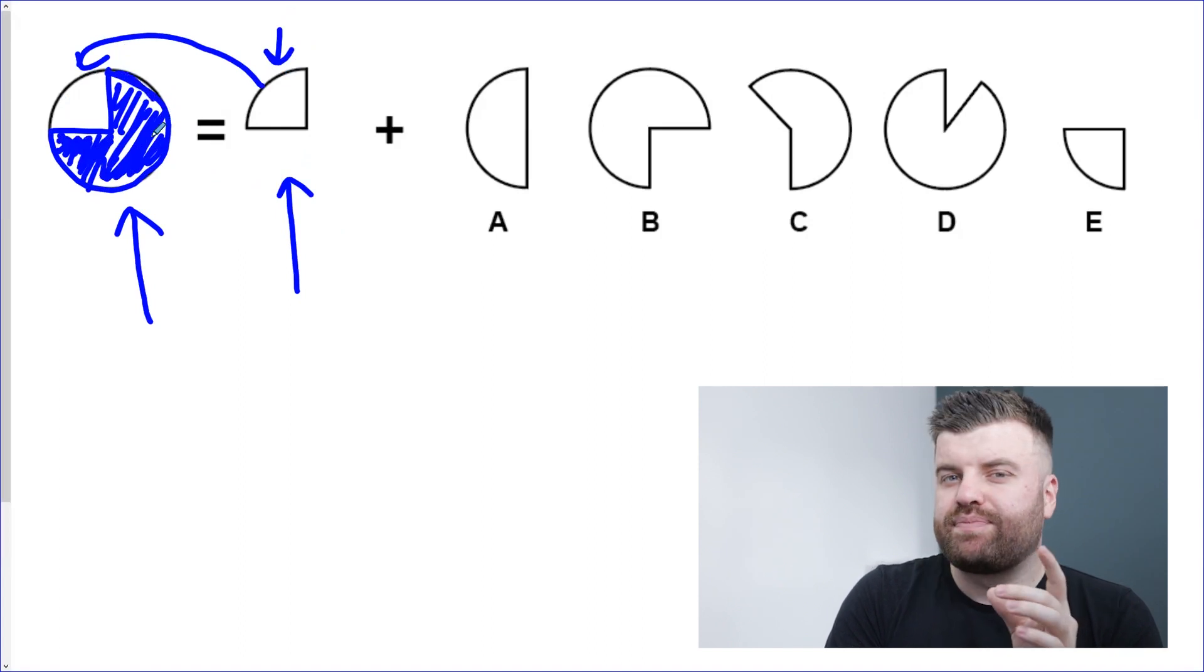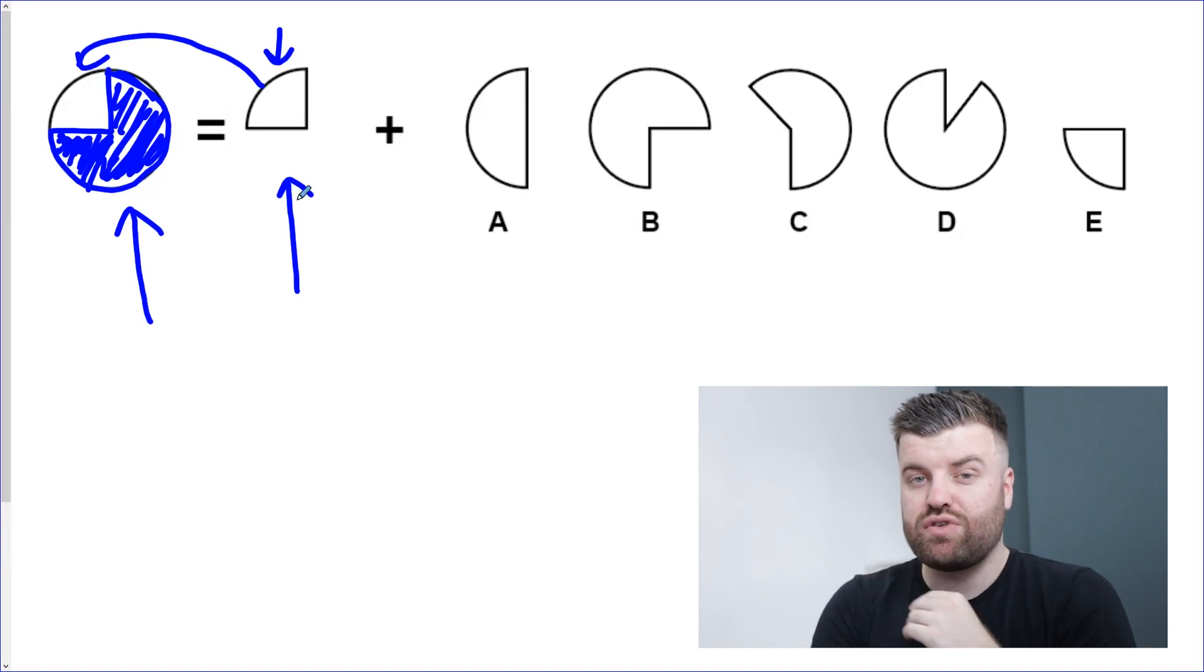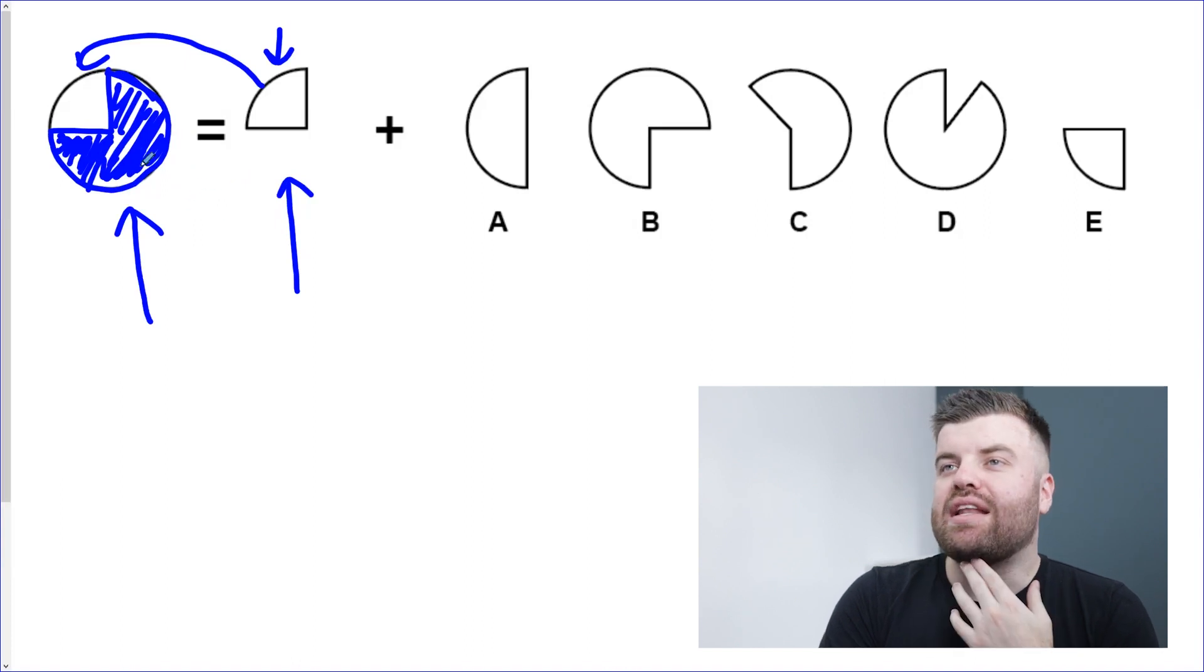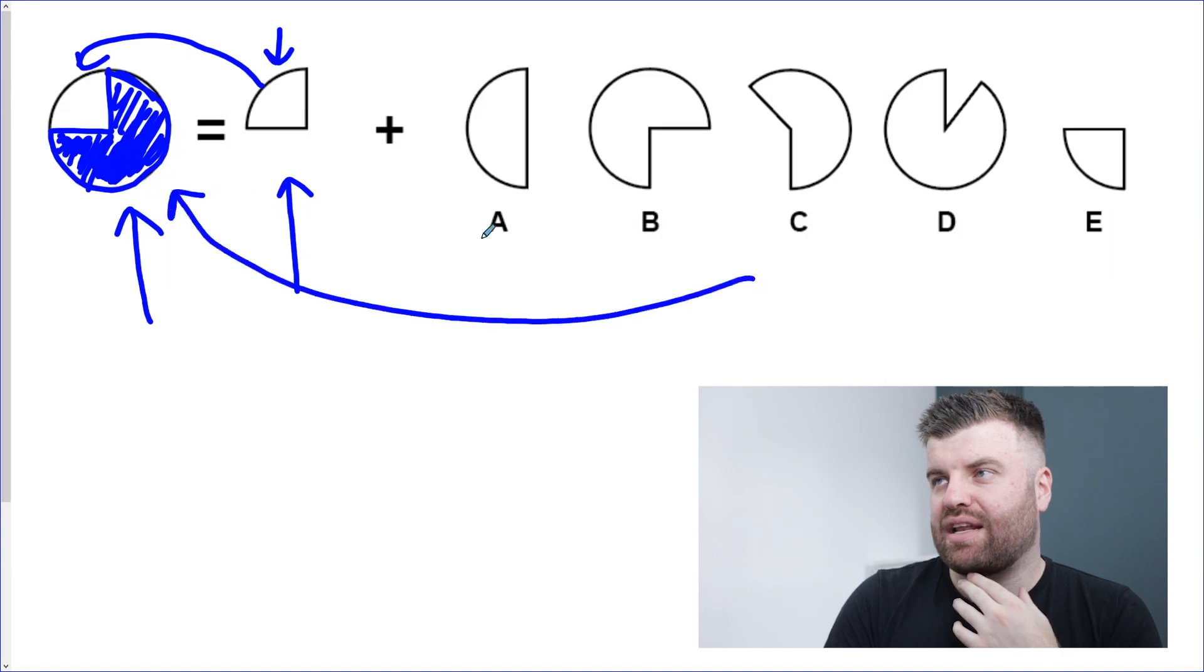But there is a bit of a trap. The shape options on the right, the five options to choose from, have been rotated, so it's not going to look exactly like it does on the left here. Now what shape on the right matches this shape on the left?